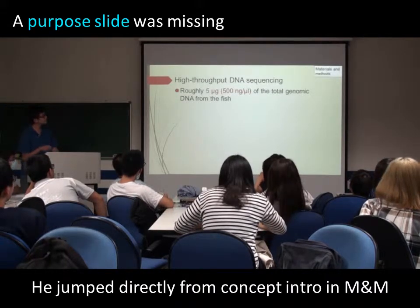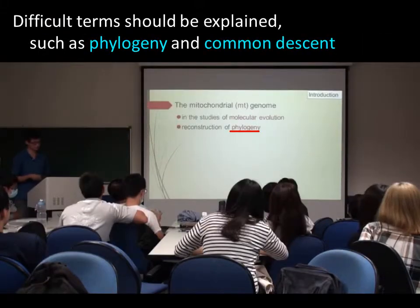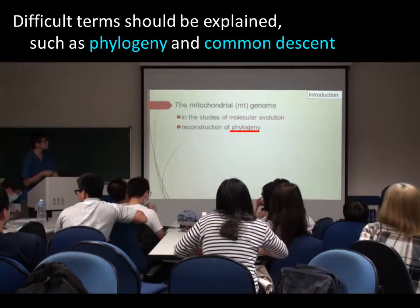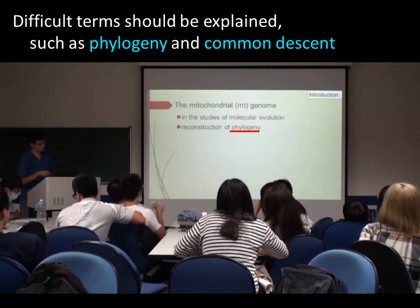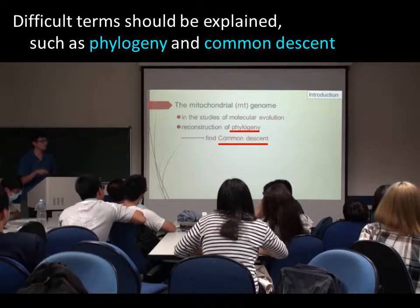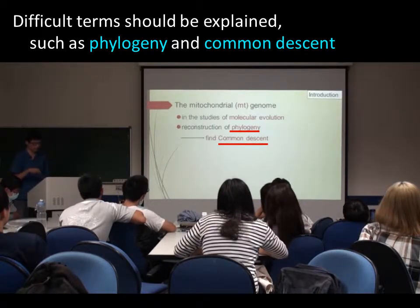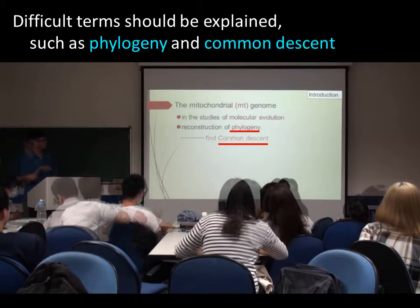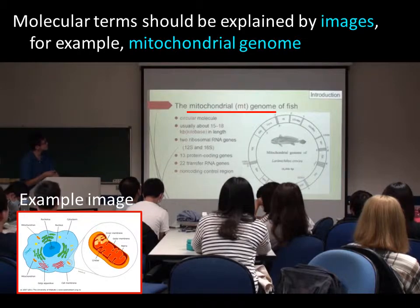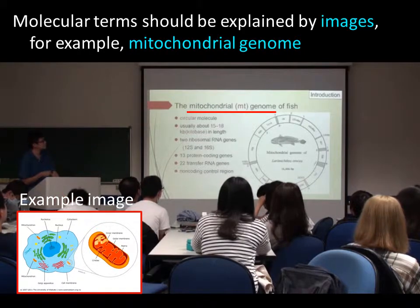This is the method. It can be the construction of any phylogeny. It can help us find species that are common research. And if we use it, let me describe the mitochondrial genome of fish.